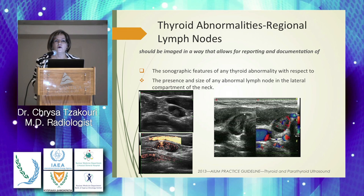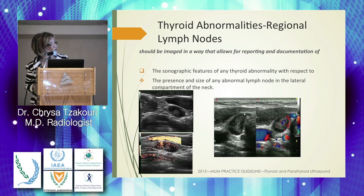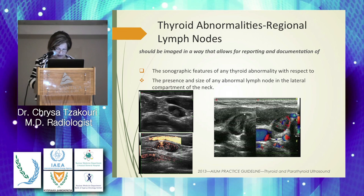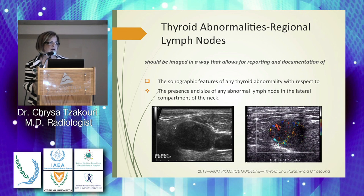It is very important to assess regional lymph nodes. Abnormality is determined not only by size but by morphology, outlines, and vascularity pattern. A round shape rather than the normal oval shape, with marked vascularity both inside and outside and loss of normal hilar pattern, indicates an infiltrated malignant lymph node.